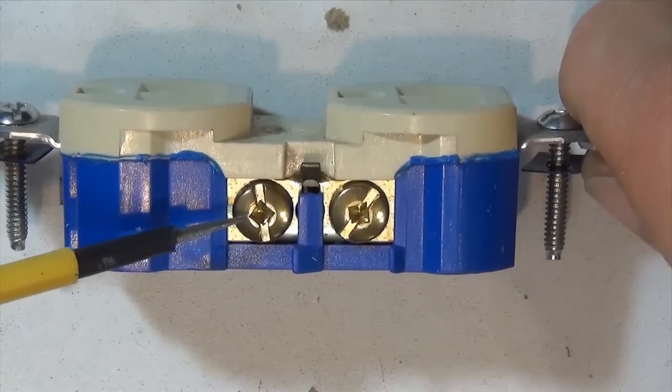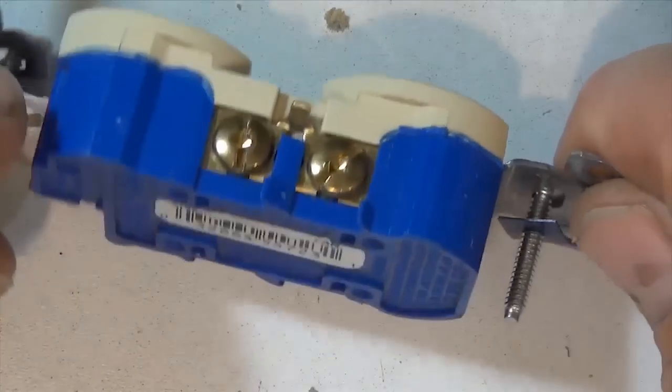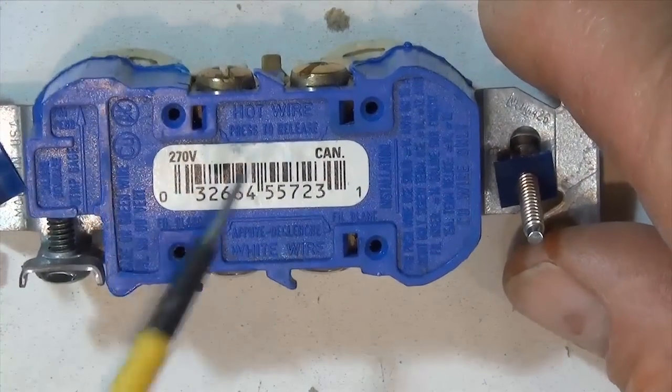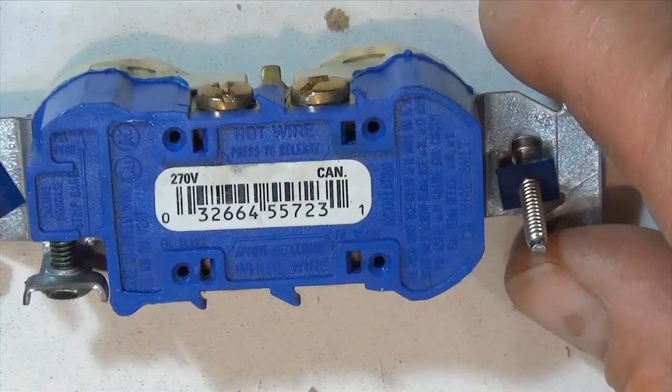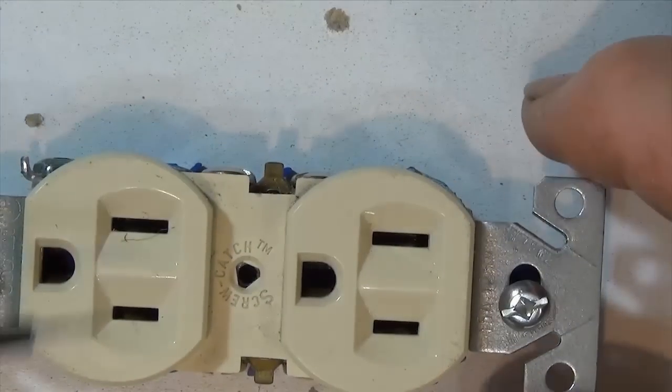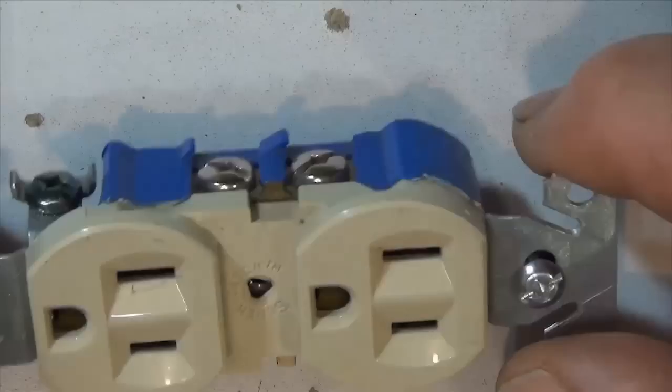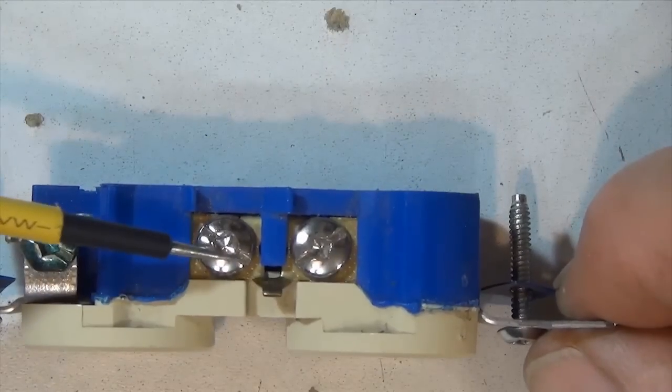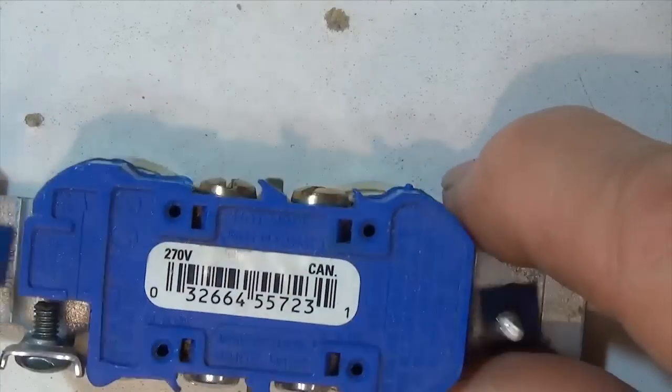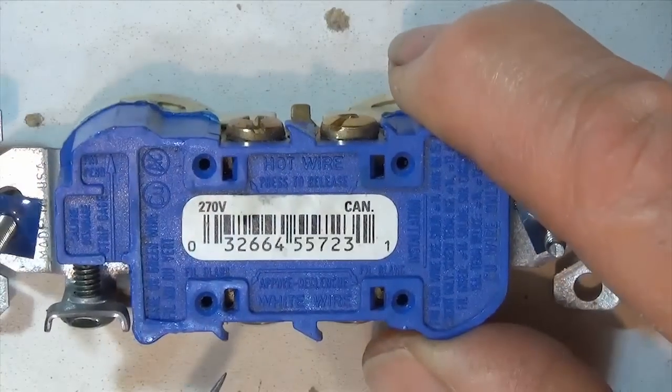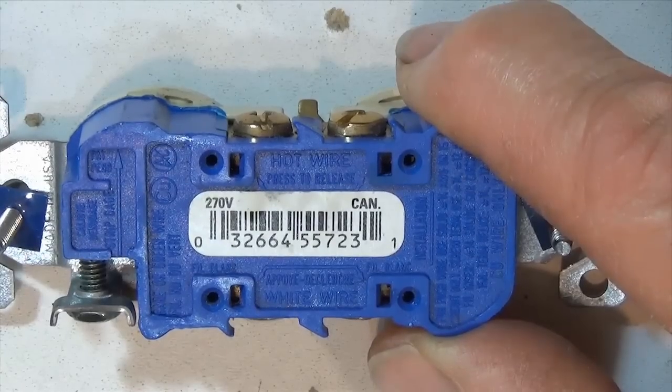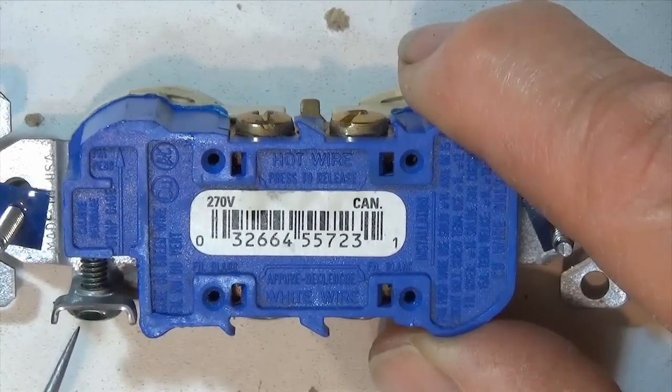So this would be the brass colored screws and if you look at the very back of the receptacle, it says hot wire. The hot wire usually will be the black wire. The wider terminal outlet is attached to these silver colored screws and if we look at the very back, it says white wire and that would be neutral. That would be at the same potential as our earth ground, zero volts.